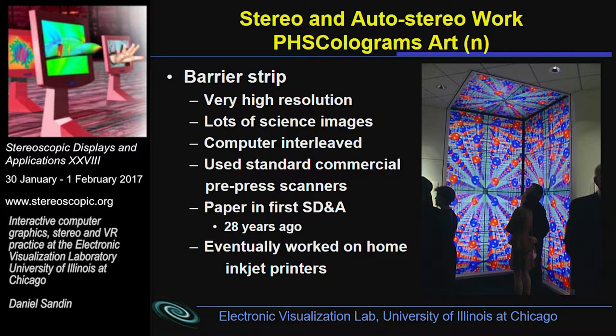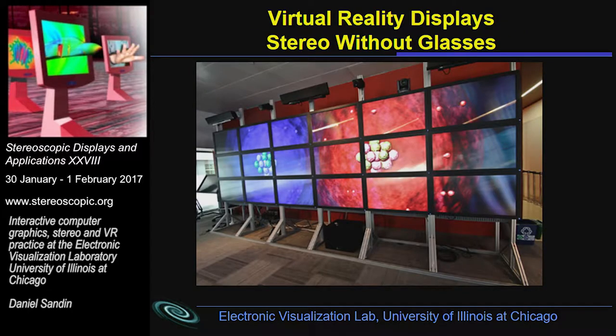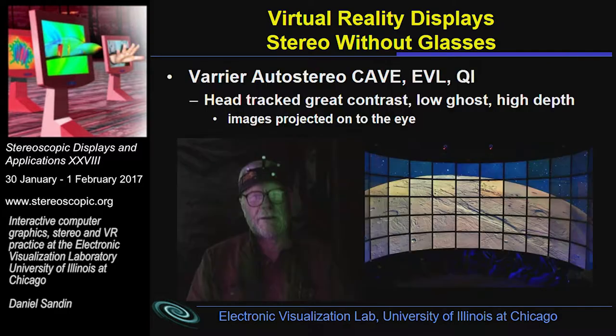We've also done quite a bit of stereo and auto-stereo work. I had a paper based on a hard-copy auto-stereo barrier strip 28 years ago at the first SIGGRAPH. We've done work with an Alioscopy display with multi-view displays in animation playback. And there was a very interesting system called Verrier — it actually projects the images out onto the eyes to view but tracks viewers. It probably got the lowest acceptance of any system I've developed. It worked very well, very high quality, very low ghosting. It was a great experience for the person being tracked, but everybody else in the room got sick.